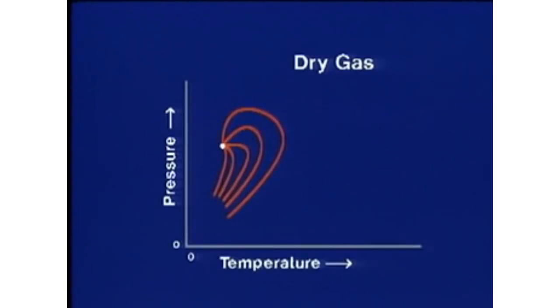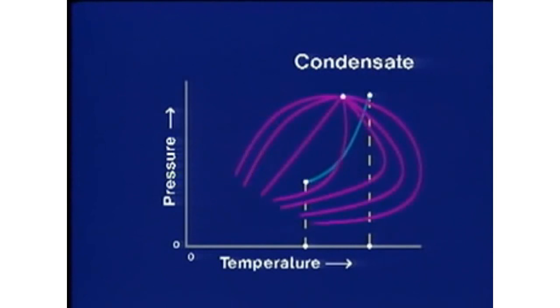We may now look at the phase diagram for several of these fluids. Here we see the diagram for a dry gas. Now we introduce the reservoir and surface conditions, and draw a line indicating the probable production path. Note that fluid never enters the liquid state during production. For a condensate, we see that two phases will form in the reservoir as we drop the pressure, and that a small percentage of liquid will be recovered in the separator.